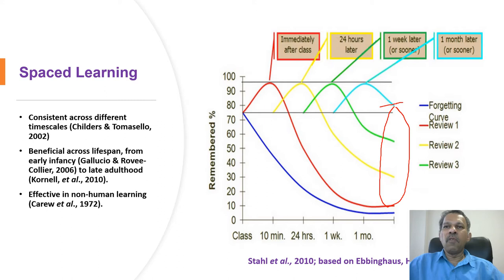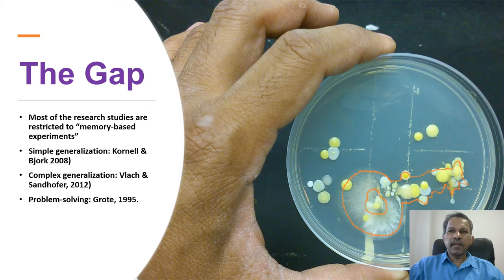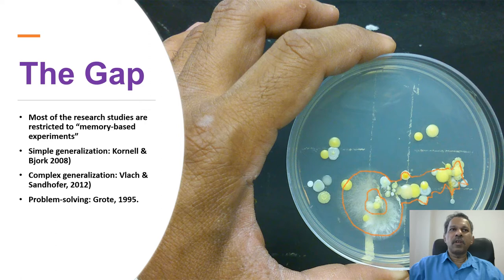Spaced learning is not a new thing — it has been studied and reviewed over a century and has been proved true across different time periods and lifespans: infants, adults, elderly, and even researched in non-human subjects and invertebrates. It is a widely documented and researched concept. When I analyzed the literature, the majority of research was restricted to memory-based experiments. Only a few extended the concept to simple generalization and a little more to complex generalization. In one experiment on complex generalization, school students were given quizzes on the food web and how they related that concept to different biomes.